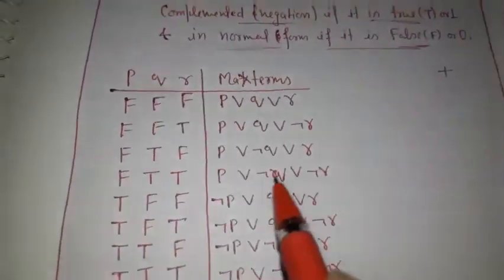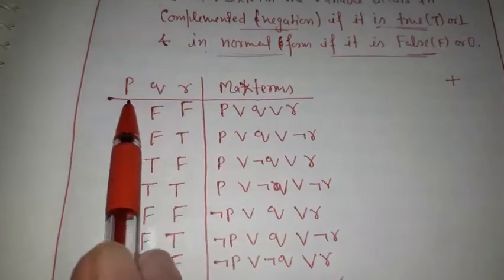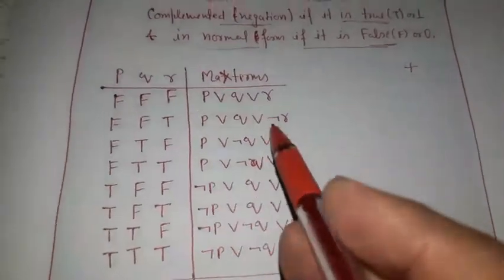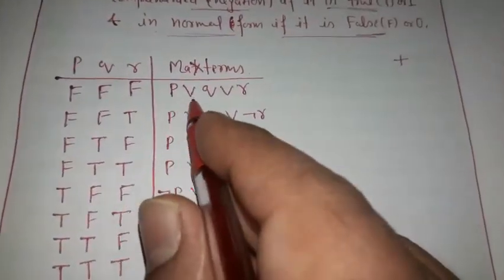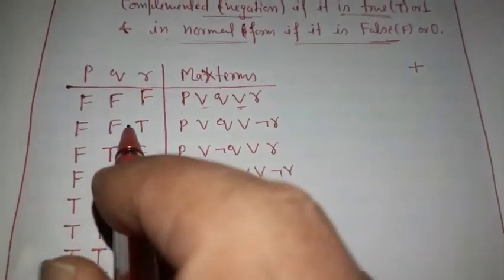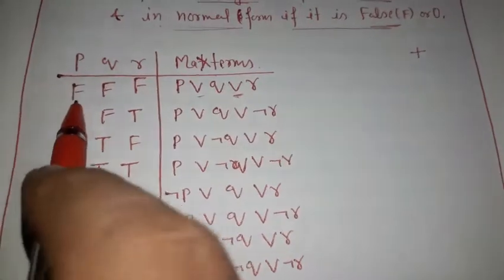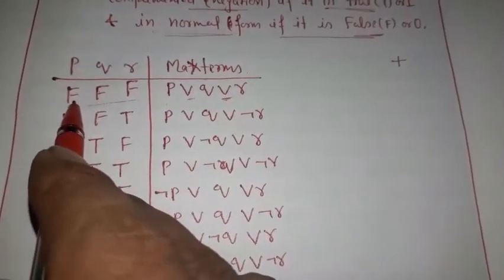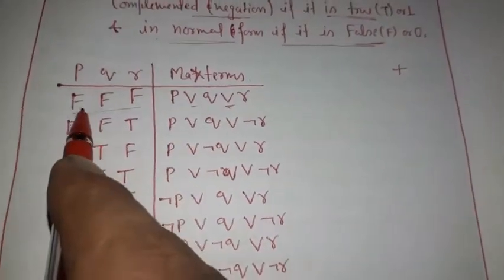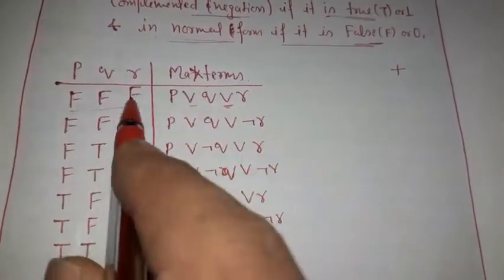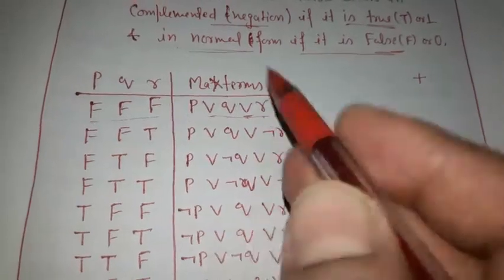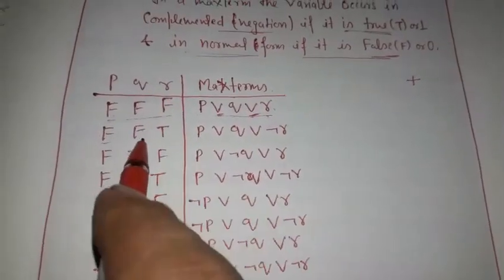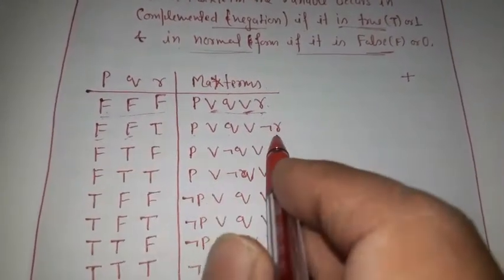For three variables p, q, r, the max term for each combination is derived using the sum (OR) operation. For the combination F,F,F: all are false so all appear in normal form, giving p∨q∨r. For F,F,T: p and q are false (normal form), r is true (complemented form), giving p∨q∨¬r, and so on for all eight combinations.